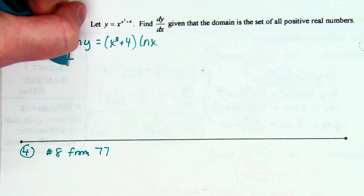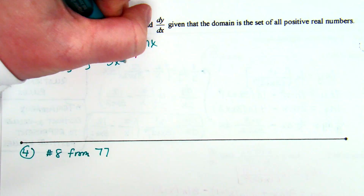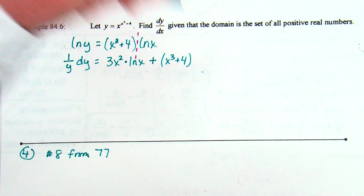Derivative of natural log of y is 1/y · dy. On the right, using the product rule: derivative of (x³ + 4) is 3x², times the natural log of x which stays. And then plus: x³ + 4 stays this time, times derivative of natural log of x which is 1/x. Officially that whole side is in parentheses.